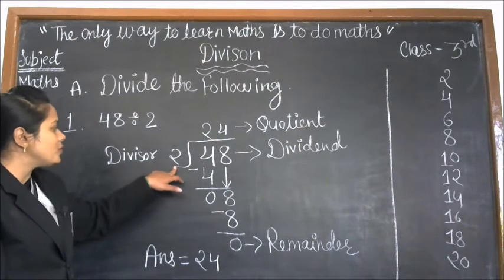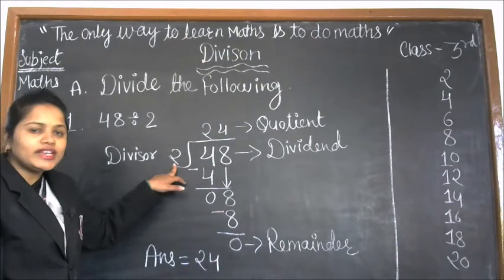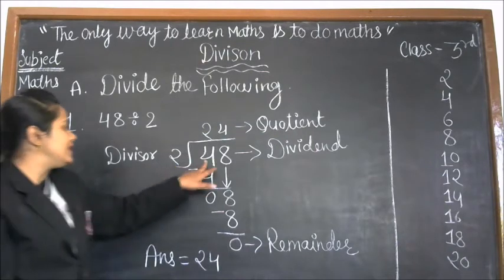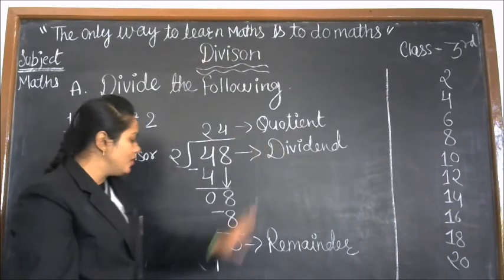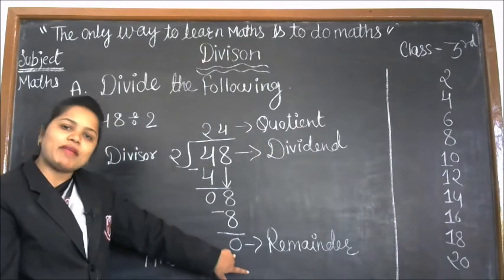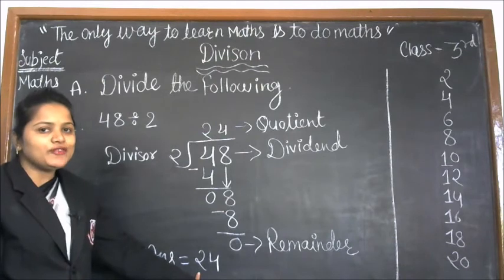This is our quotient. This is our divisor, this is our dividend, which is our answer is quotient, and last which is remainder. So our answer is 24.